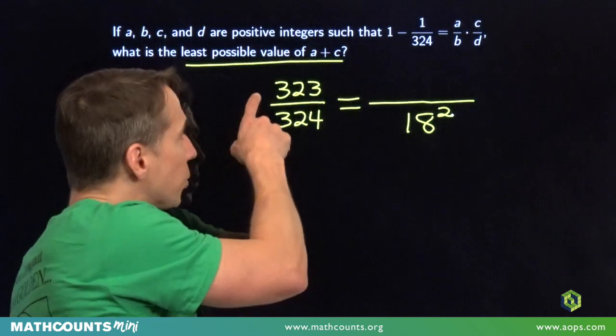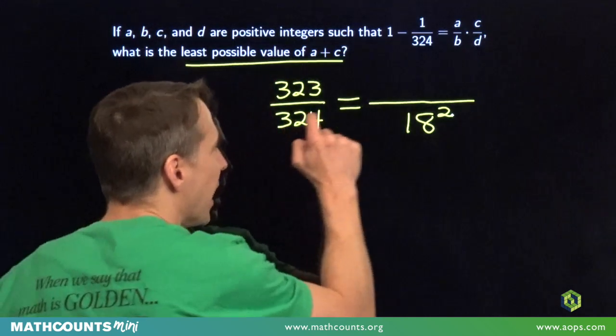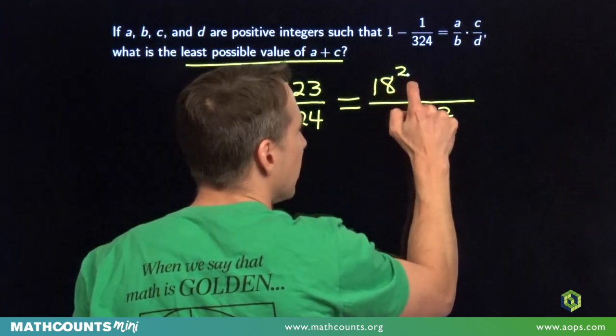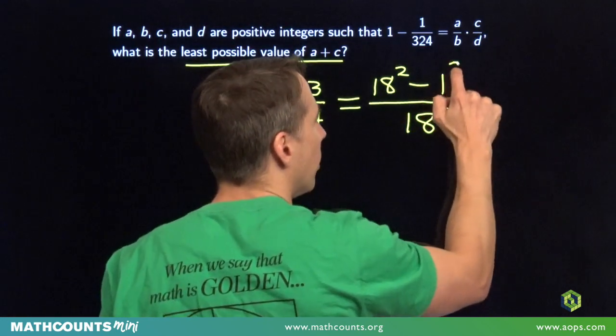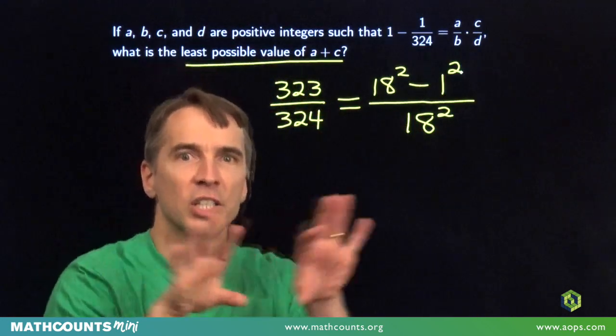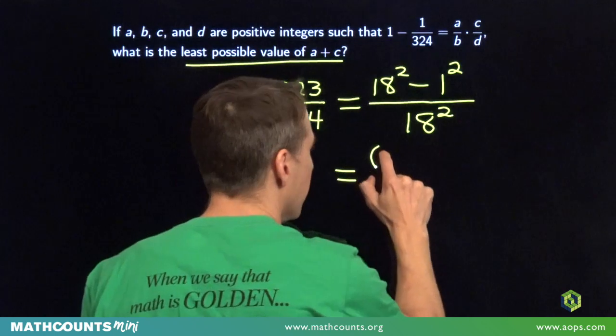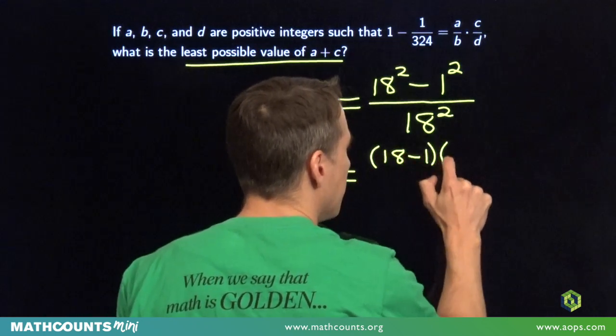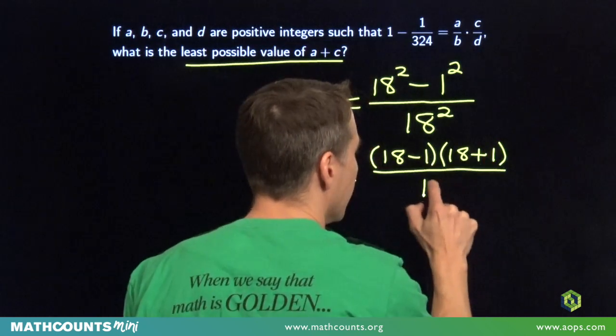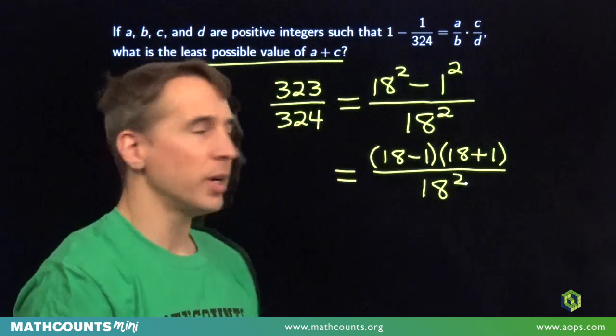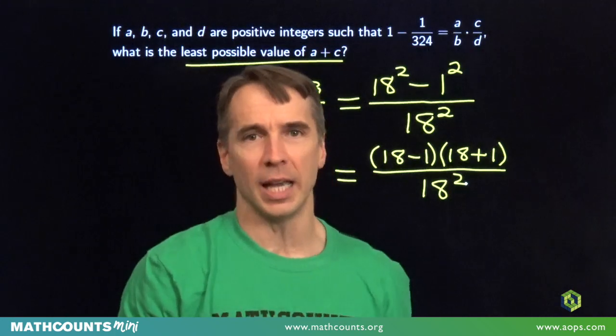This 323, it's 1 less than 324. It's 1 less than a square. That's really nice. That's really nice because 1 is also a square. We can write that numerator as a difference of squares, and we can factor it as a difference of squares. 18 squared minus 1 squared is 18 minus 1 times 18 plus 1. 18 minus 1 is 17, 18 plus 1 is 19.